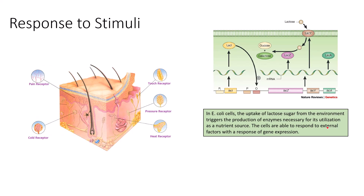Response to stimuli is the ability of a cell or organism to produce a response to a particular external or environmental stimulus. In E. coli cells, the uptake of lactose sugar from the environment triggers the production of an enzyme necessary for the utilization of that sugar as a nutrient source — the cells respond to external factors through gene expression. This pathway is called the lac operon. E. coli will not produce the enzymes necessary to break down lactose until lactose is present in its environment — it is a form of energy conservation.